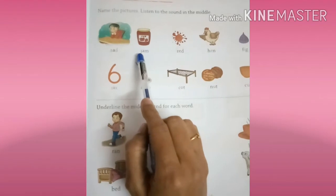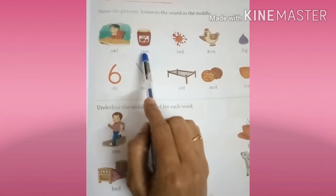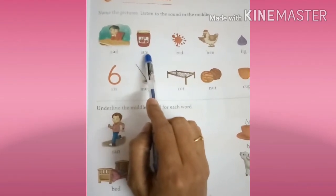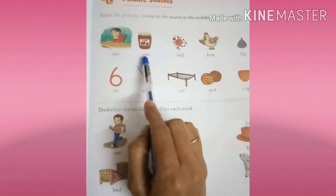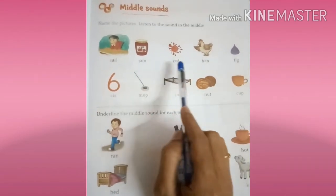J-A-M. J sound is J, A sound is A, M sound is M. J-A-M, jam, okay.